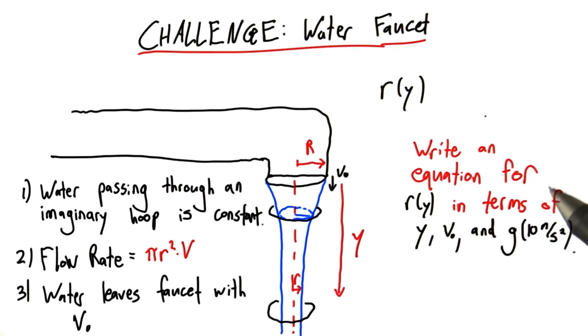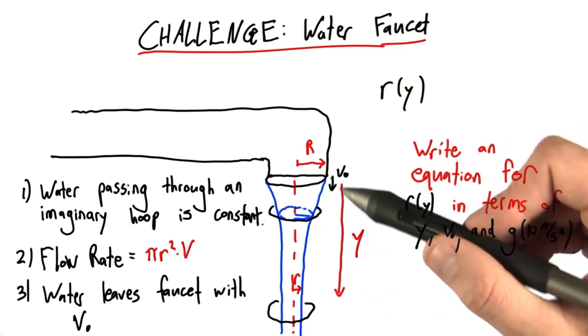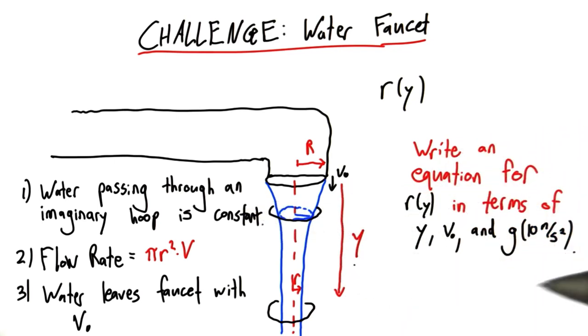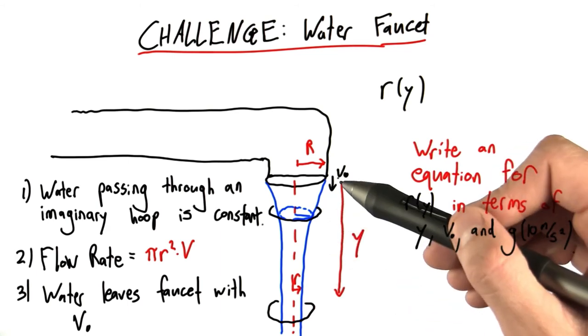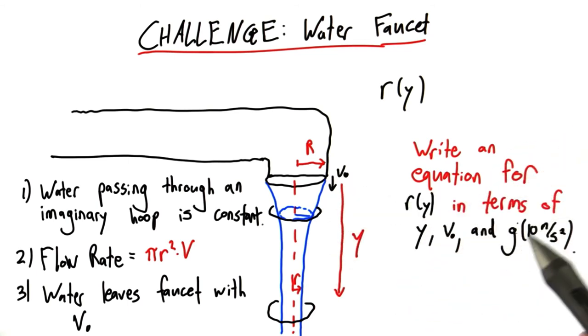So what I want you to do is write an equation for the radius of this water as a function of how far it's fallen, y, in terms of y, this initial velocity, and g, the acceleration on earth, which is 10 meters per second squared.